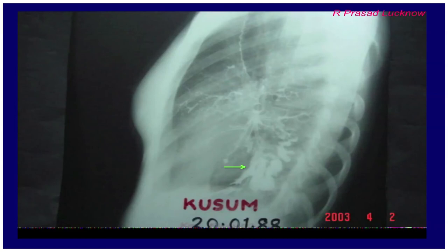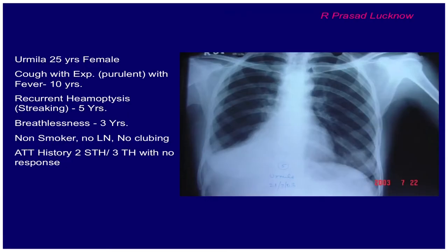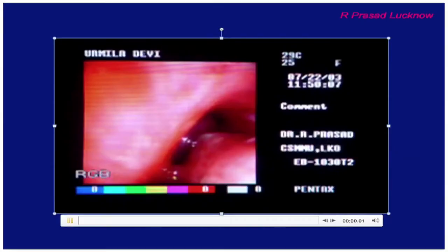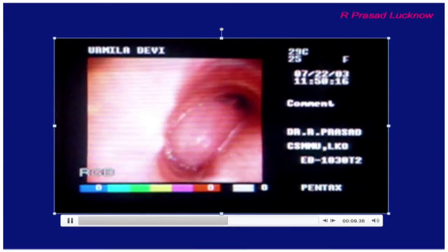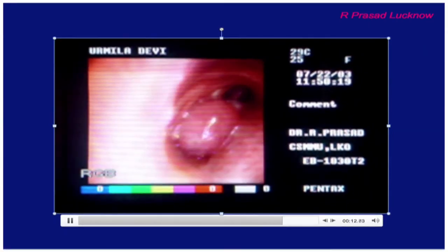That is the importance of diagnosis while you treat any patient. This is another lady, about 25 years old, who presented with purulent cough and expectoration, recurrent fever for 10 years, recurrent hemoptysis for 5 years, and breathlessness for 3 years — given anti-TB drugs without response. The X-ray looks nearly normal except that the volume of the right lung is less and the cardiophrenic angle is obliterated. On bronchoscopy, a pedunculated polyp was found and diagnosed as a polyp in the right lower lobe.